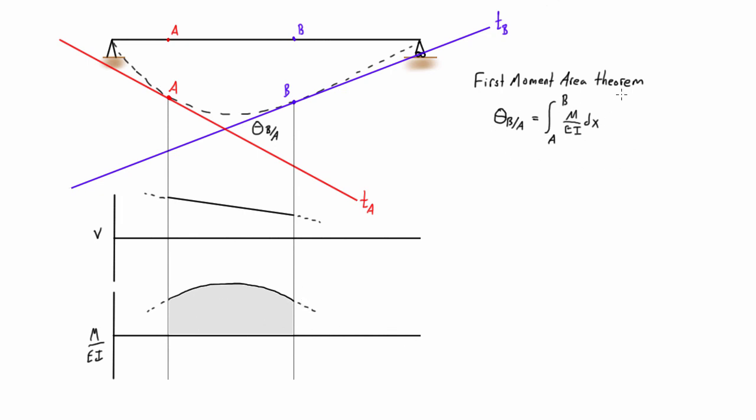So if you see, like on a formula sheet or something, you have this first moment area theorem, and you forget what this integral is, basically it's just the slope of B relative to A, is the area of the M over EI diagram between A and B. And this value ends up being in units of radians if you've done it correctly. So that's the first half of the moment area method, is the first moment area theorem.